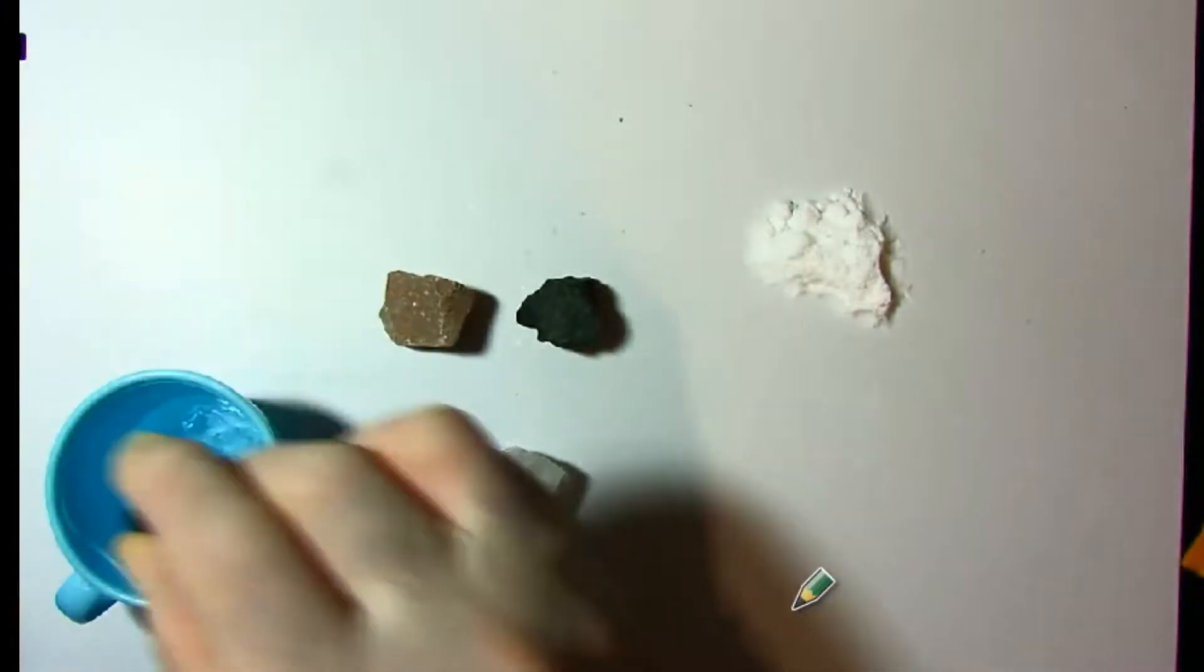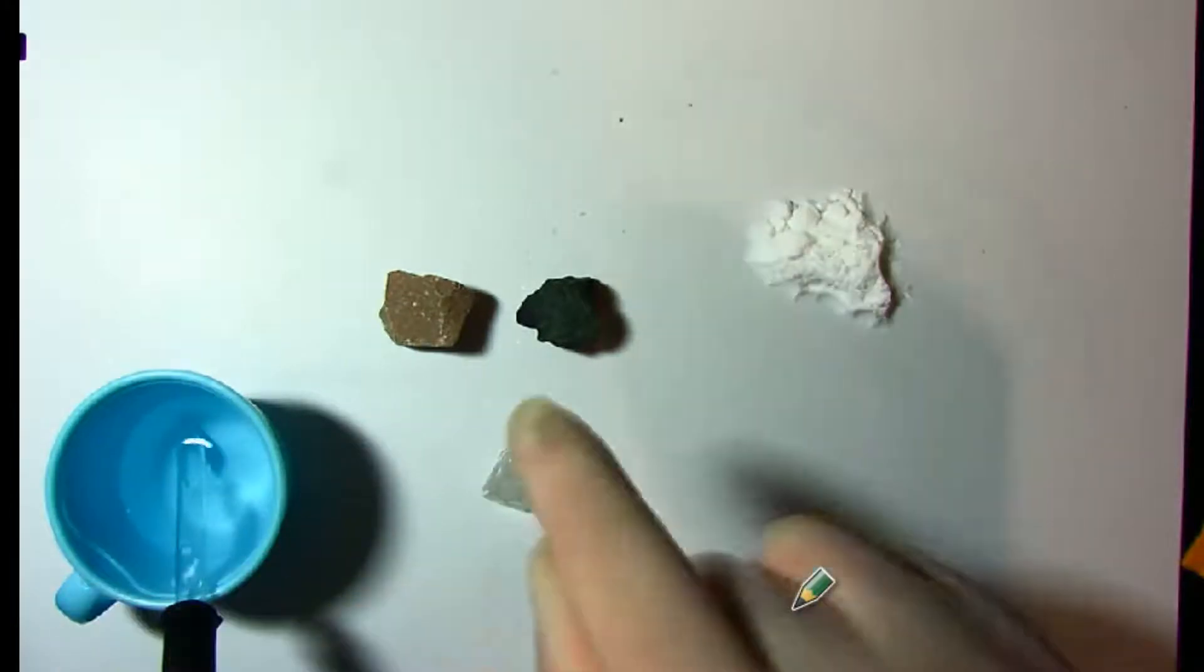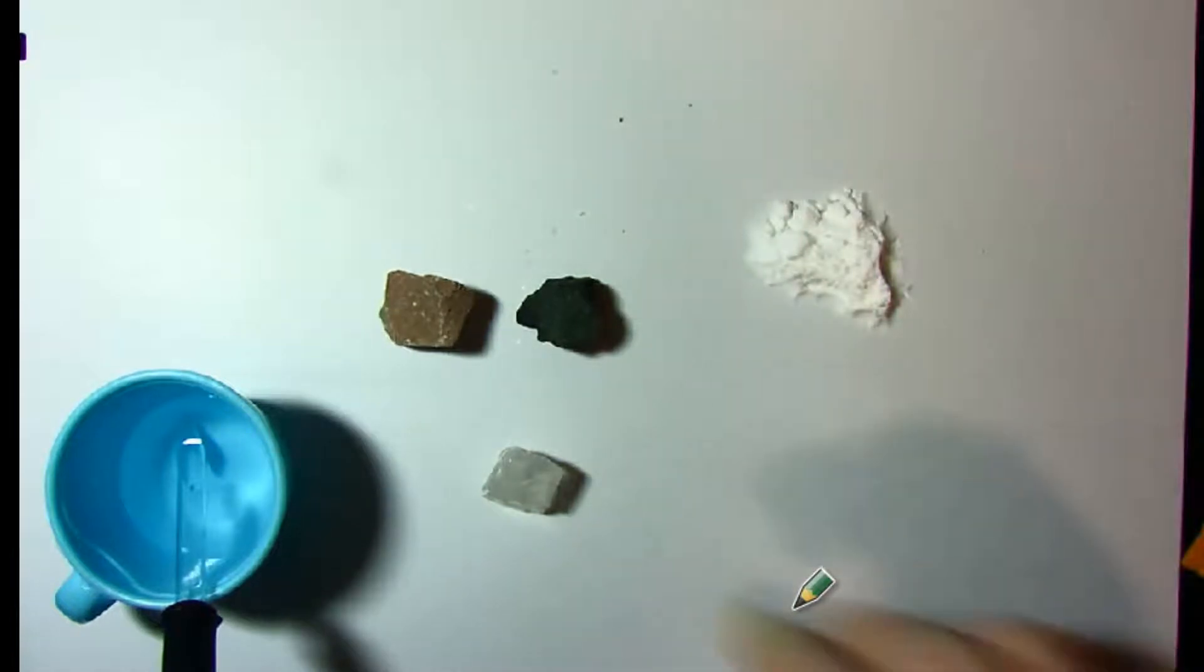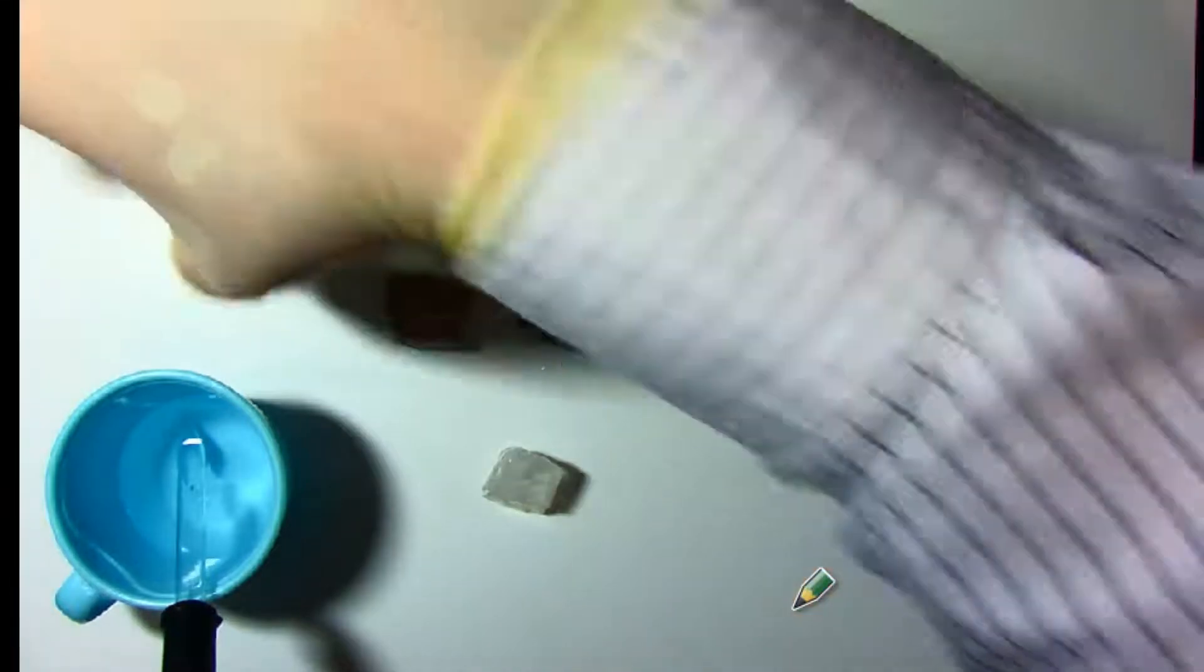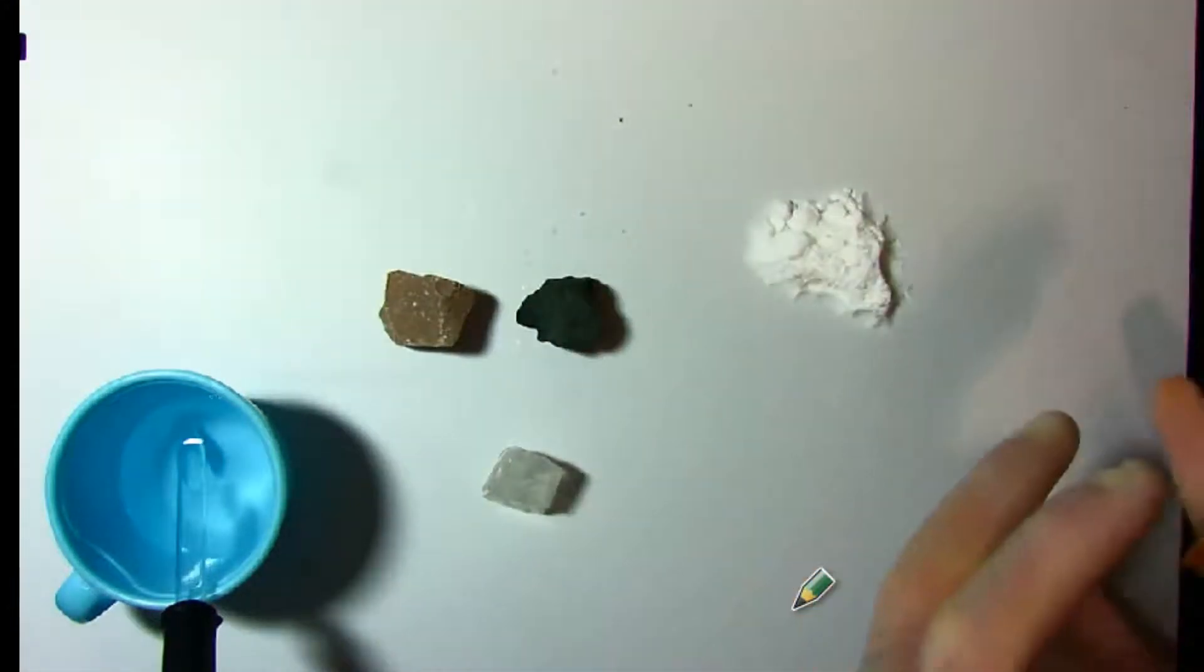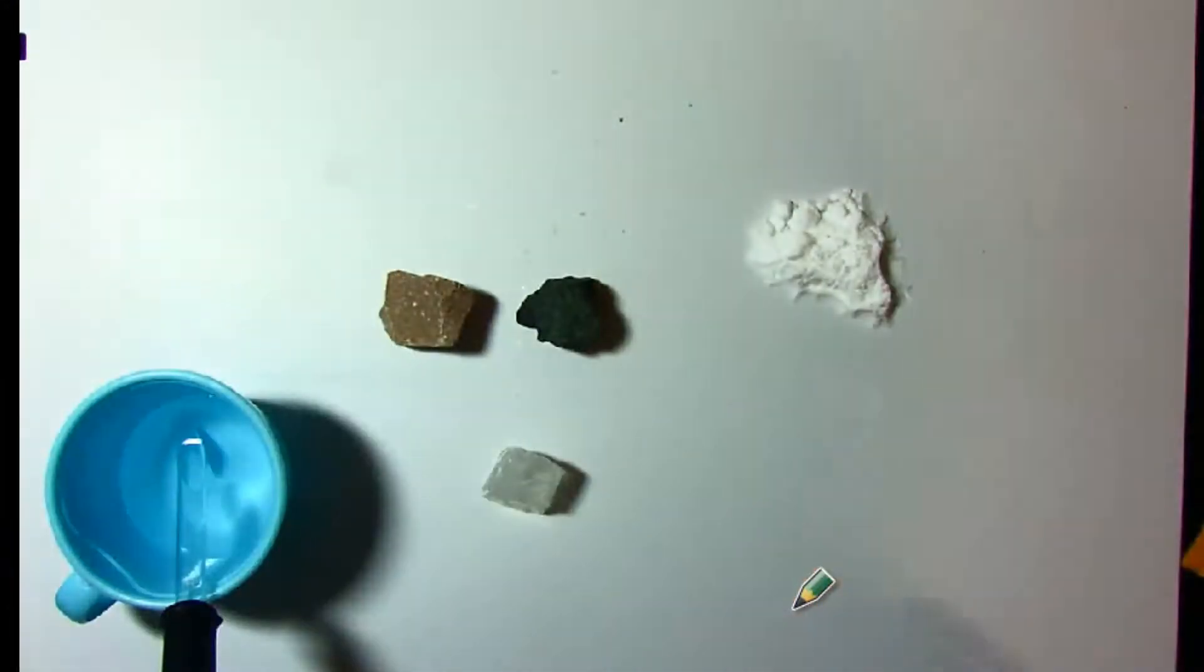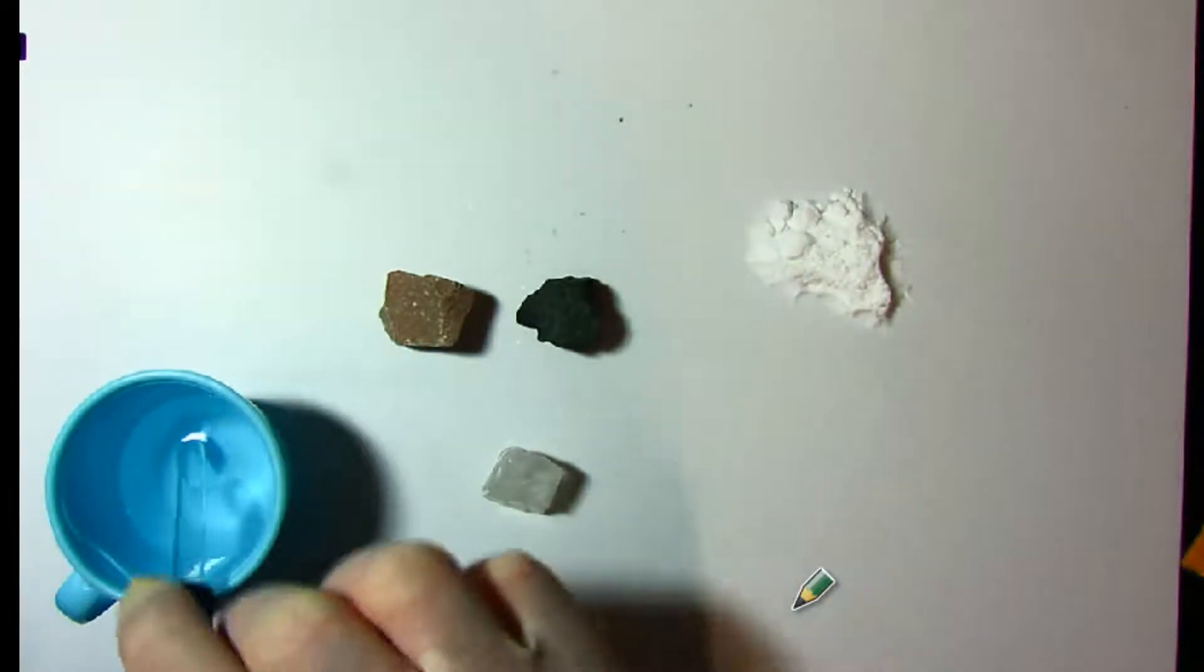You take a little bit of vinegar and you drip it on the stone. If it fizzes, you know it's got carbonates. That's it. That's as simple as it is. And then you can group the rocks together. The ones that have carbonates in them can go into one pile. The ones that don't have carbonates can go into another pile, and you can organize rocks that way, based on properties. So let's test the first rock.